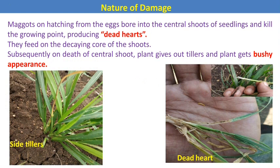In the picture, we can see that in the first image, side tillers emerge due to the killing of the central shoot. This is the dead heart. There is even a legless larva visible — a yellowish larva present inside the central shoot. Due to the feeding on the central shoot, dead heart symptoms are produced.